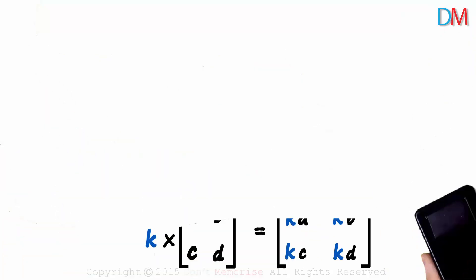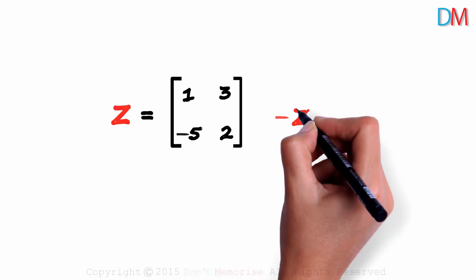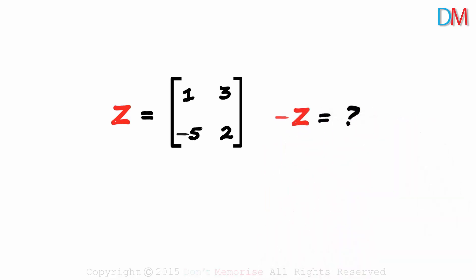Can we find the negative of a given matrix? Let's say we have a 2 by 2 matrix Z. How do we find minus Z? Pause the video and think about how you can find the negative of matrix Z. It's easy if you were able to apply the concept we used.